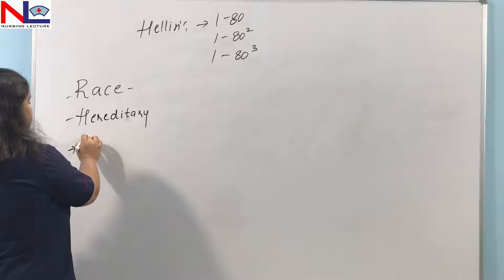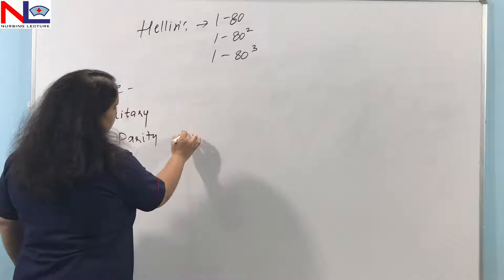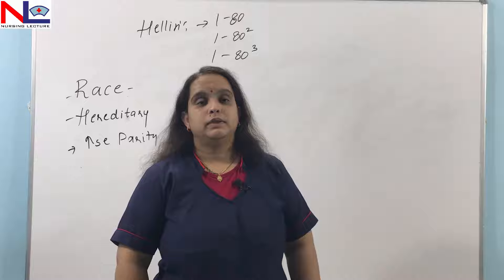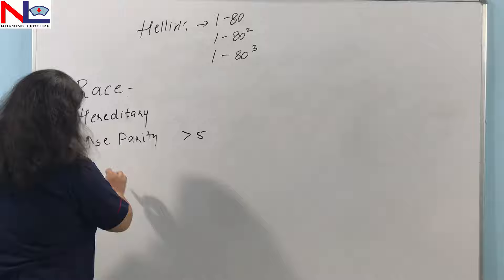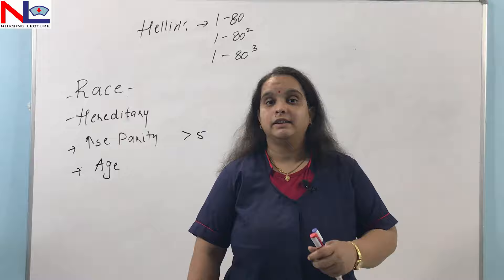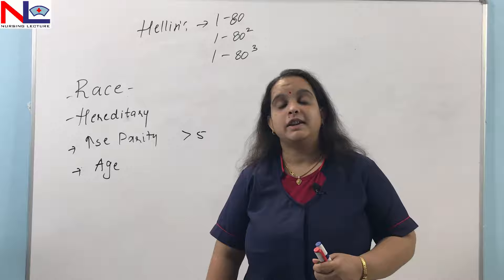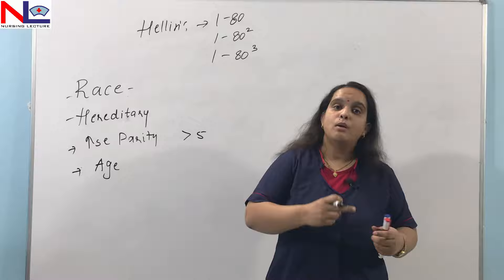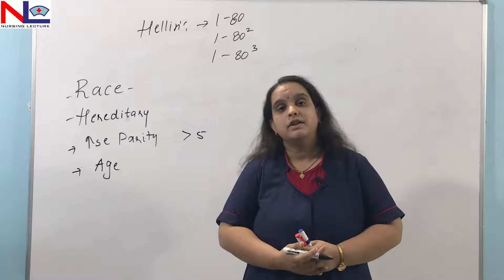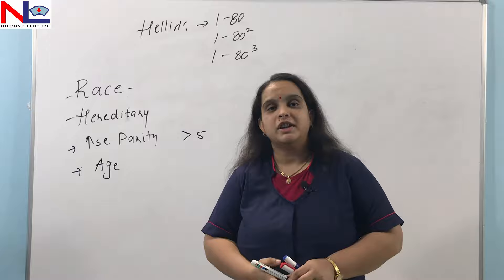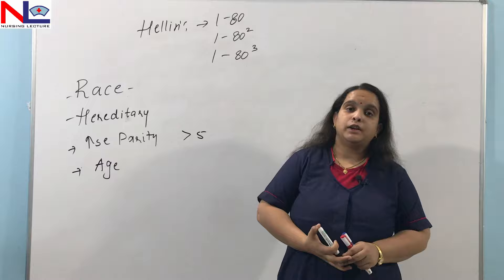Increased parity is also a factor: from the fifth gravida onwards, there is a greater chance of multiple gestation. Age is another factor: if a woman is over 30 and nulliparous and is taking ART therapy or ovulation induction therapy, more follicles will grow simultaneously, increasing the chance of multiple gestation. Combined use of ART along with ovulation induction drugs such as clomiphene citrate and gonadotrophins are all responsible for multifetal gestation.